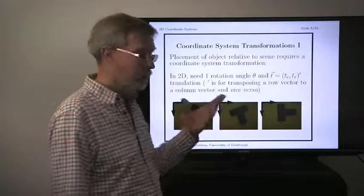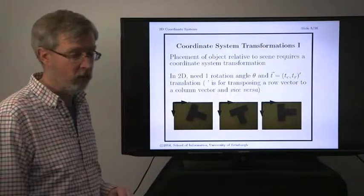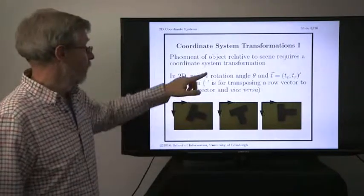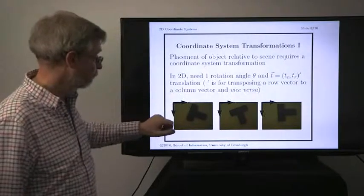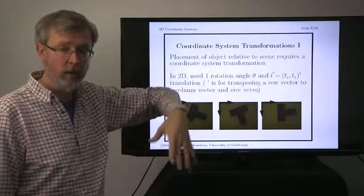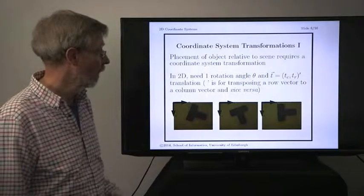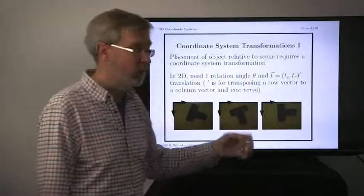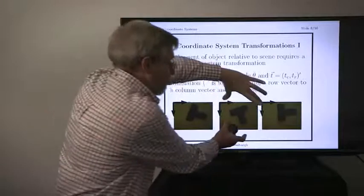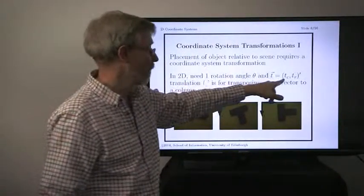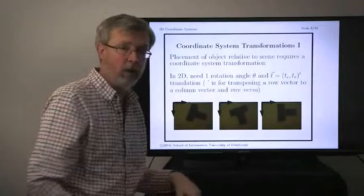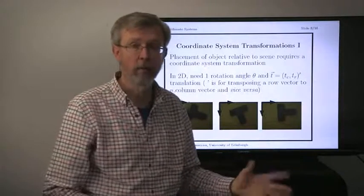Let's look at how we can place two coordinate systems relative to each other — this is the idea of a coordinate system transformation. In two dimensions, we really need to specify two things: the orientation or rotation of one coordinate system relative to the other, and the translation — the position of the object relative to the other. In two dimensions, we need one rotation parameter — the rotation of the object in the image — and the translation, which needs two parameters for how far the object has moved horizontally or vertically. When we get to three dimensions, we'll extend this further.